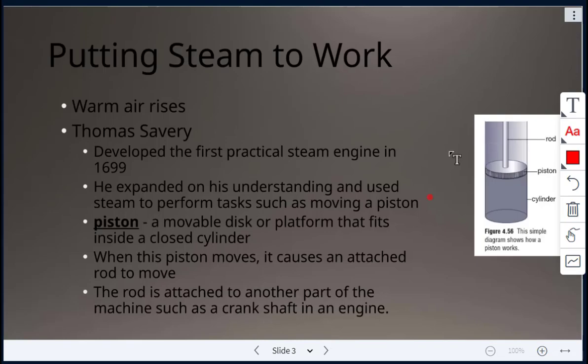Here in this image, it's a simple image showing the piston, the cylinder, and a rod. So what we know is that warm air rises. And so Thomas Savery, based on that, he was able to develop the first practical steam engine in 1699. He expanded on his understanding and used steam to perform tasks such as moving this piston. This piston is a movable disk or platform that fits inside this closed cylinder. When the piston moves, it causes this attached rod to move as well. And then this rod is attached to another part of the machine, such as a crankshaft in an engine.